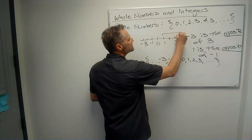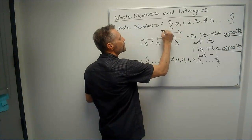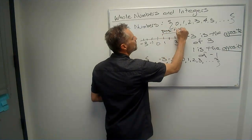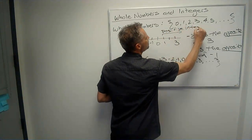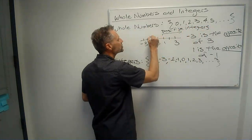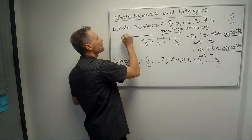Now, all these numbers to the right are called the positive numbers, the positive integers. And then, of course, all the ones to the left are the negative integers.